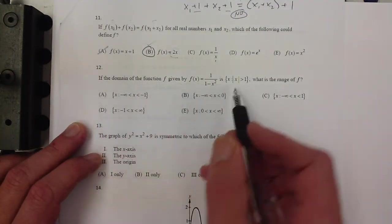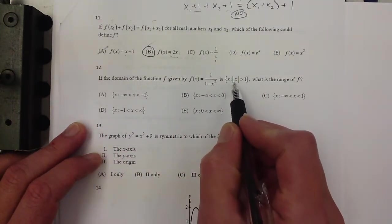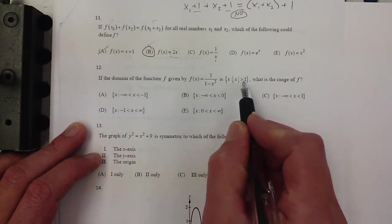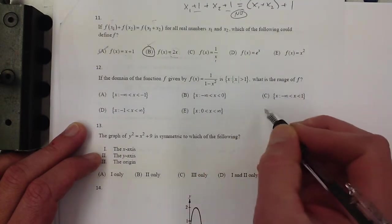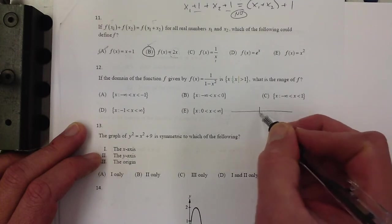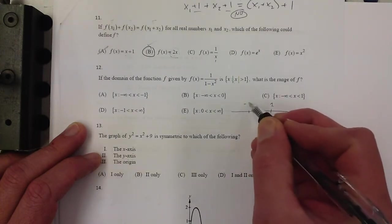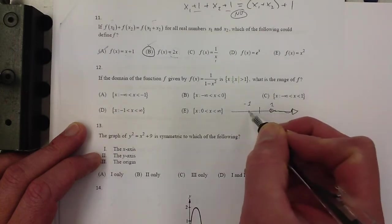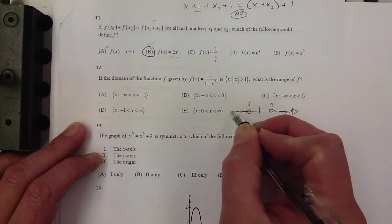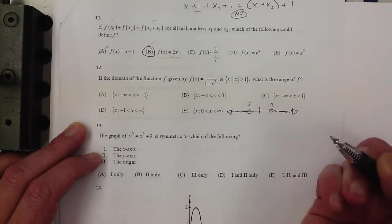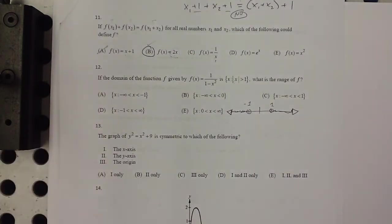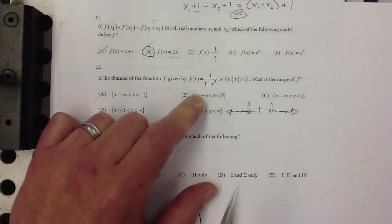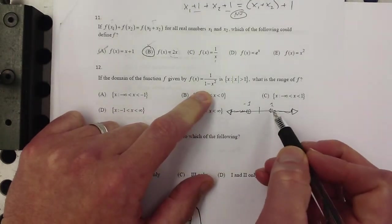Number 12, if the domain of the function is |x| > 1, remember what that looks like, that's like all of, if this is 1 and negative 1, that's like all that stuff and all this stuff, right? Then what's the range of the f function? Well, let's consider some of those numbers and see if we can't figure that out.